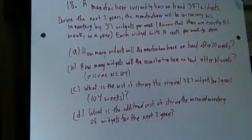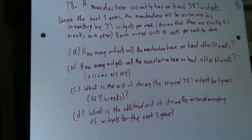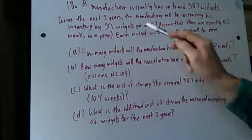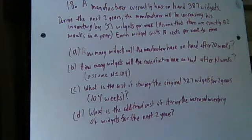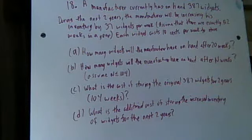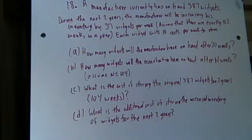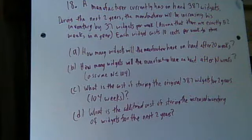Let's read it. A manufacturer currently has on hand 387 widgets. During the next two years, the manufacturer will be increasing his inventory by 37 widgets per week. Assume that there are exactly 52 weeks in a year, so for us, two years is 104 weeks.